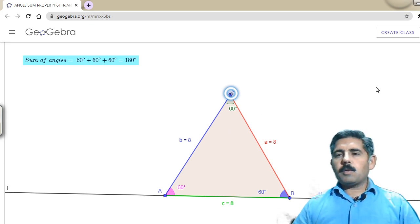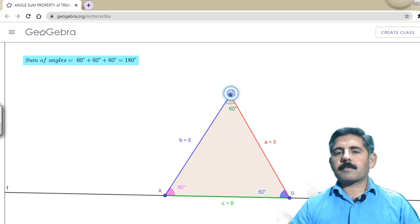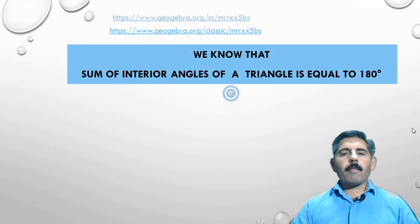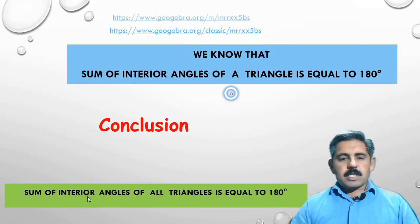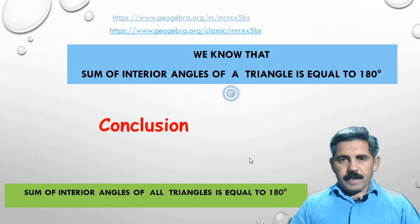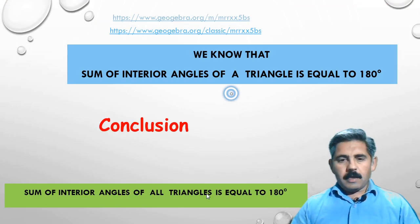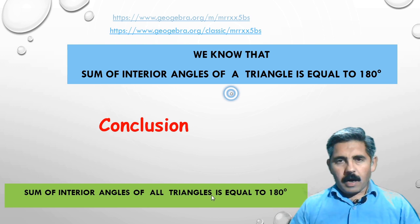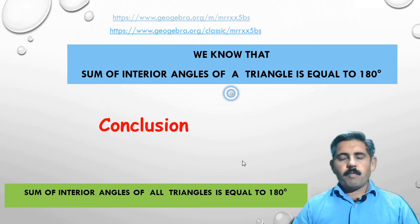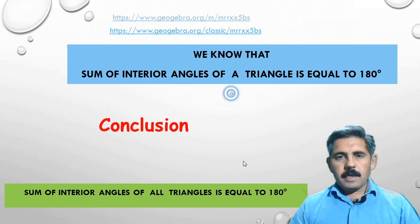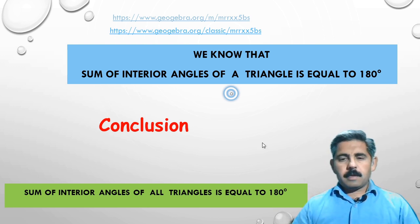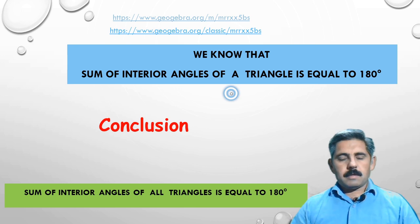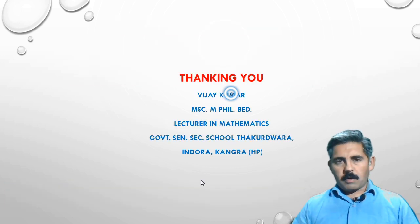So we have our conclusion: the sum of interior angles of all triangles is equal to 180 degrees. You get it? That's all.